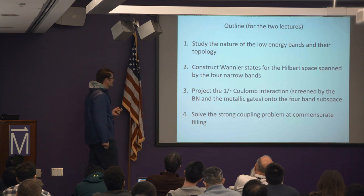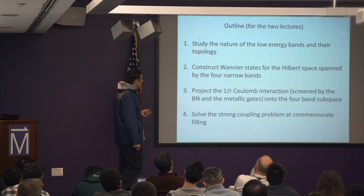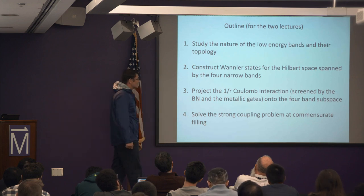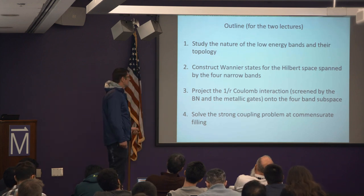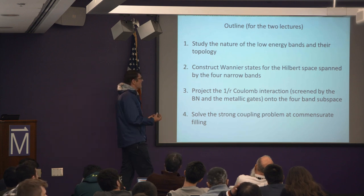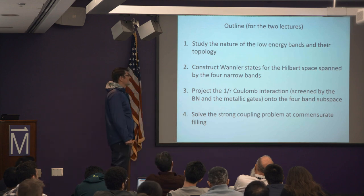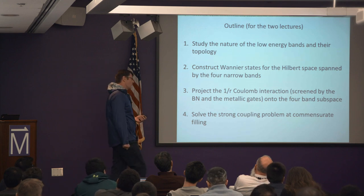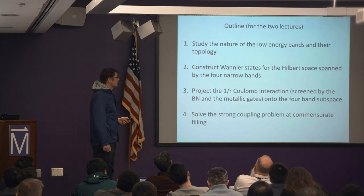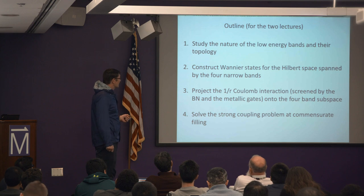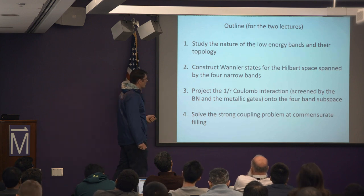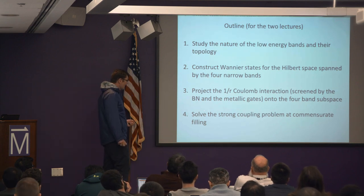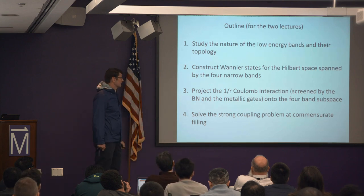The outline for these two lectures: first, study the nature of the low-energy bands and their topology; second, build a Wannier basis — localized on a lattice — which in the strong coupling limit is the hopefully correct starting point; third, project the 1/r Coulomb interaction onto this four-band subspace described by Wannier states; and finally try to solve the strong coupling problem at commensurate fillings.